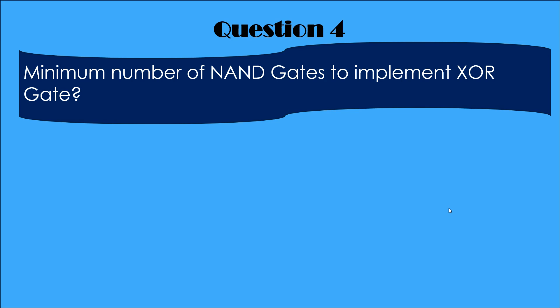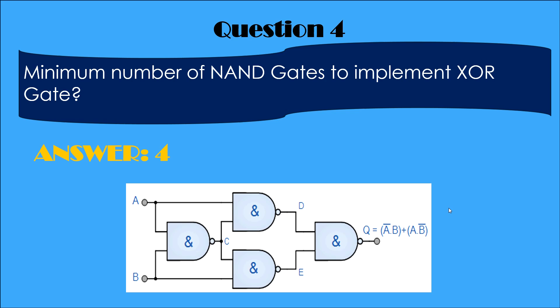Question number 4. Minimum number of NAND gates to implement XOR gate. You may try at your end. But I am going to tell you the answer. Answer is 4. And this is the logic.